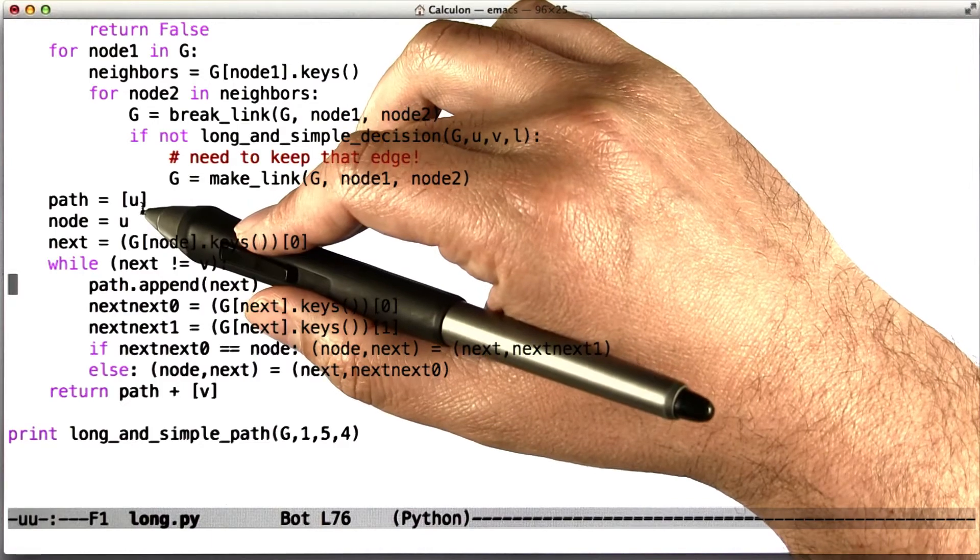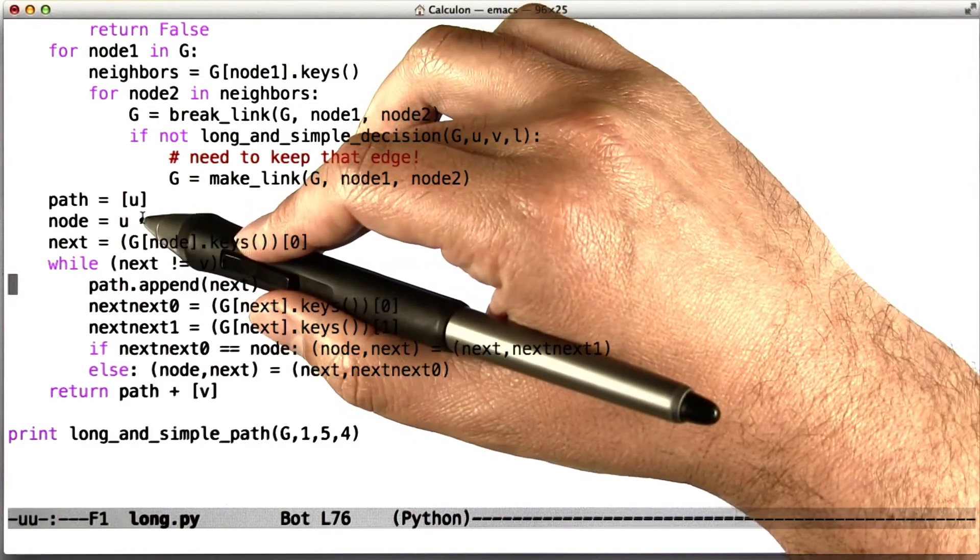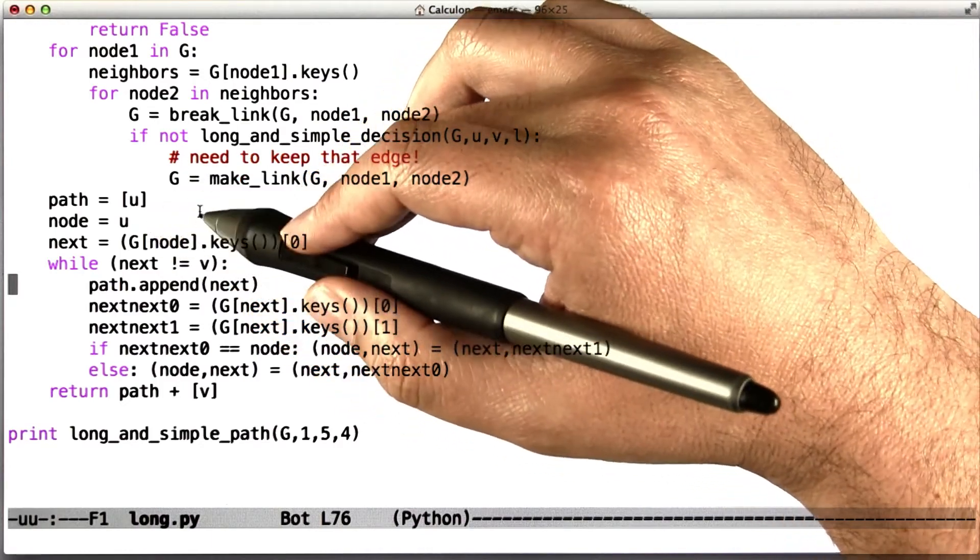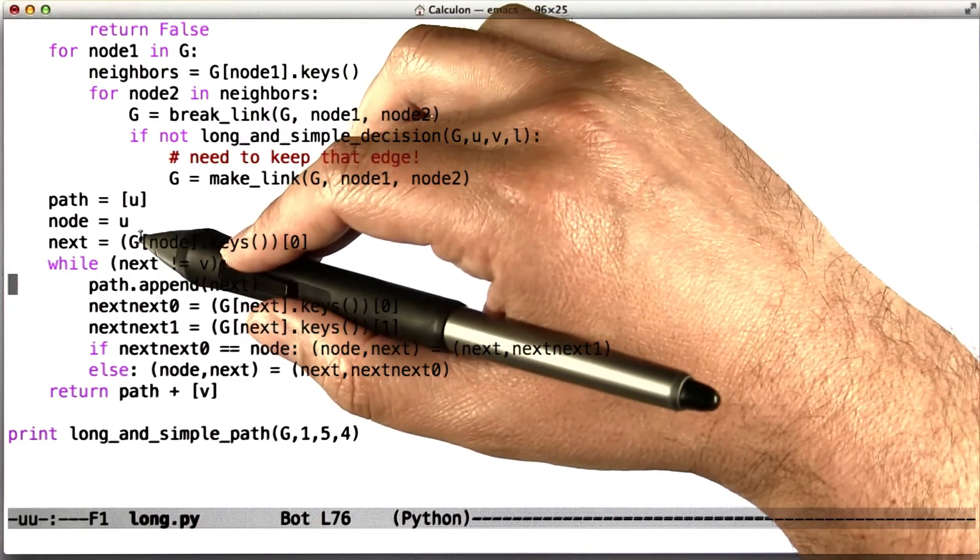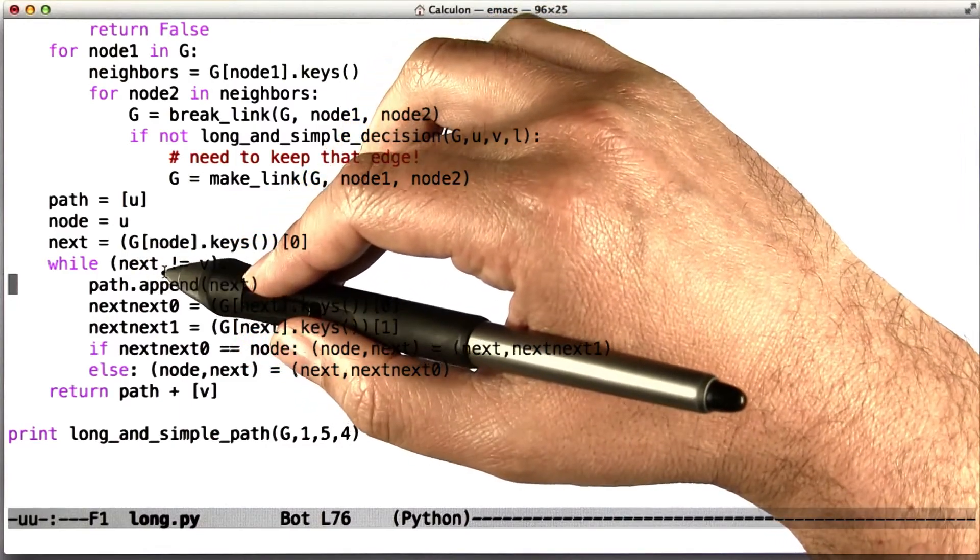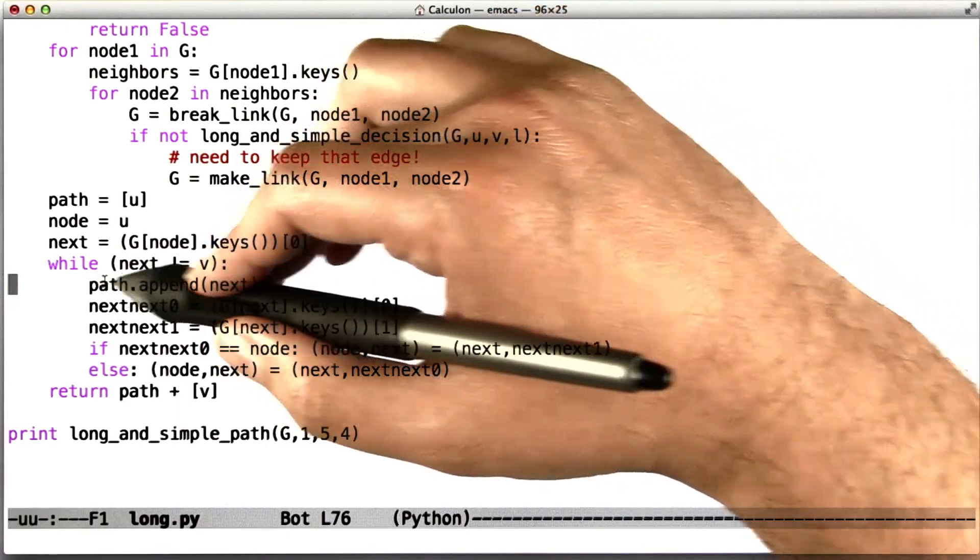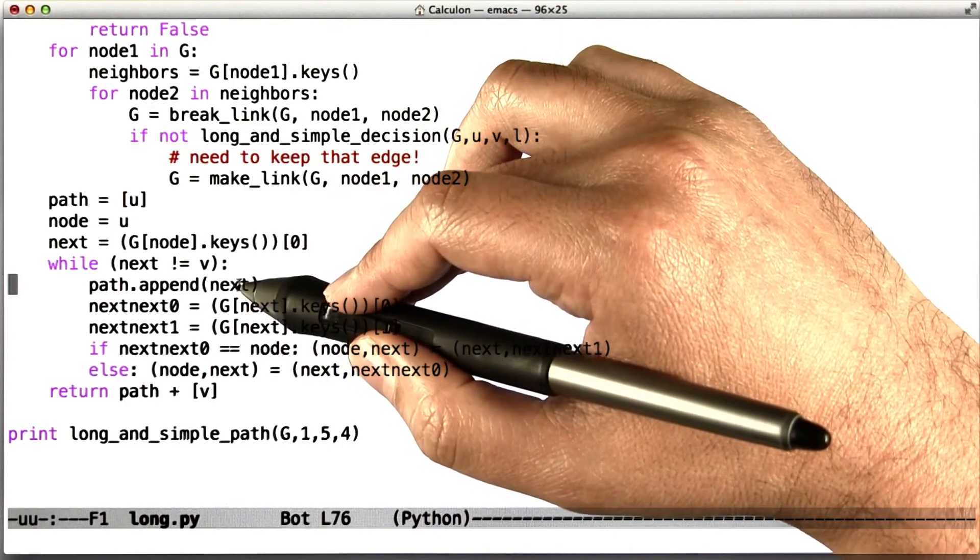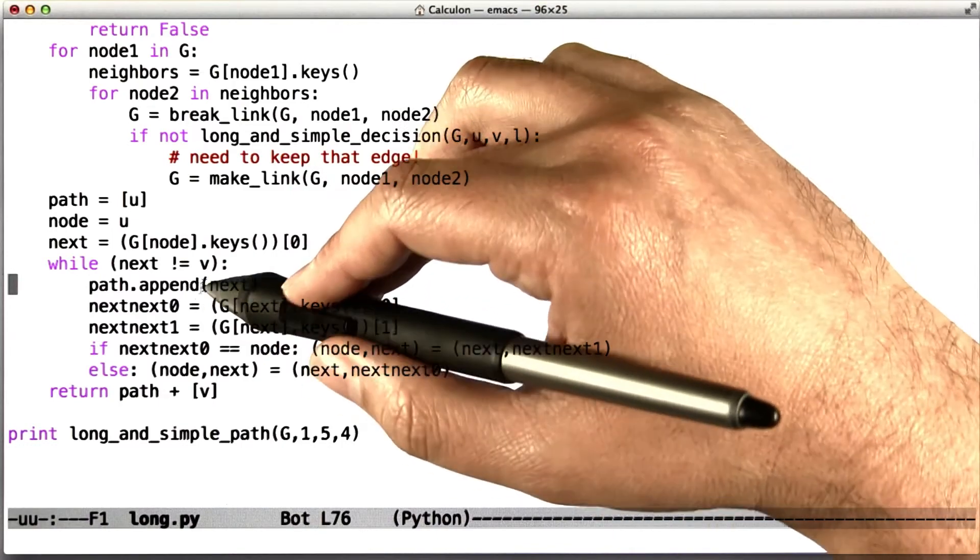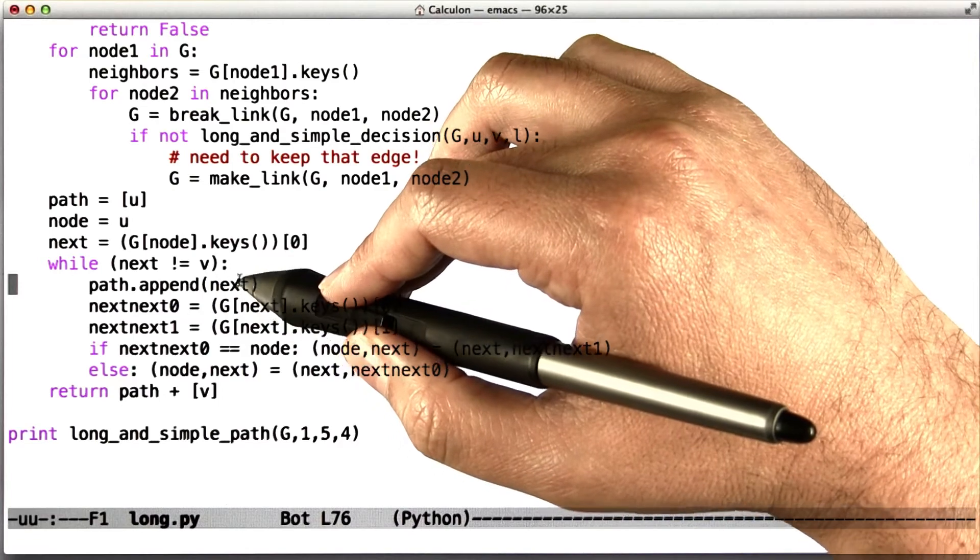Notice there can only be one neighbor of U, because all that's left is the simple path from U to V. So now we say as long as that next node that we're looking for isn't V, we append next to the path so far, so we have the first two steps, and now we're at a new node.